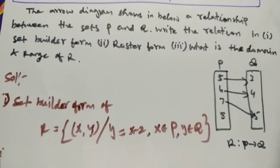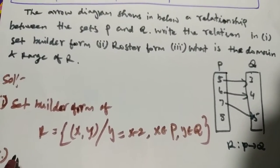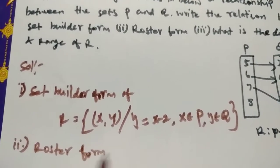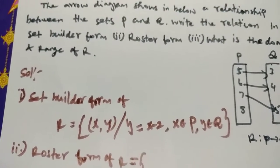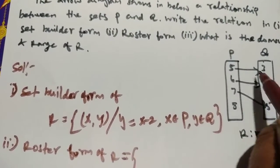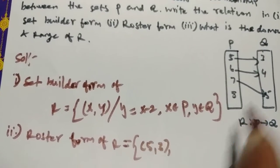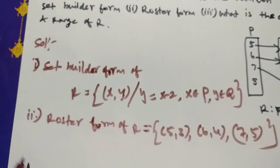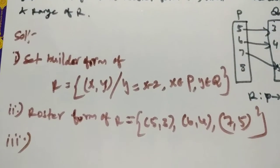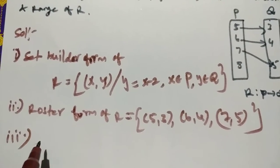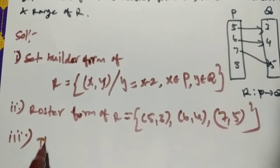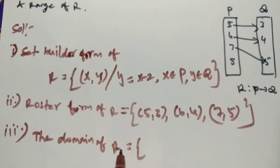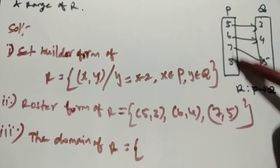Second one is roaster form. Set builder form equals the set of ordered pairs. R equals... so the first element...